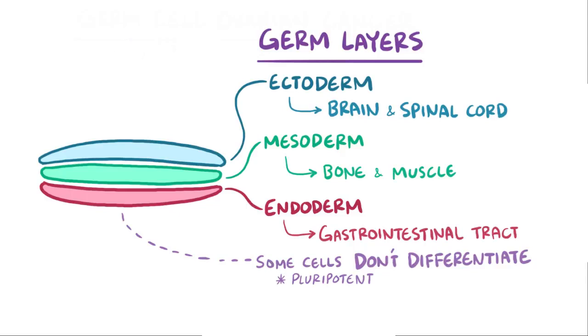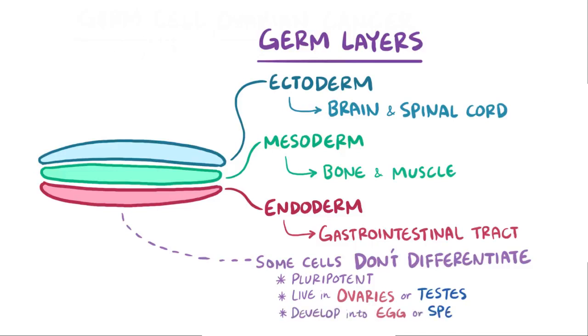Normally, during development, these germ cells head to the ovary in women or testicle in men, where they remain for decades, eventually developing into eggs or sperm, respectively.